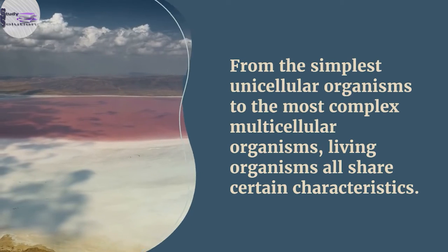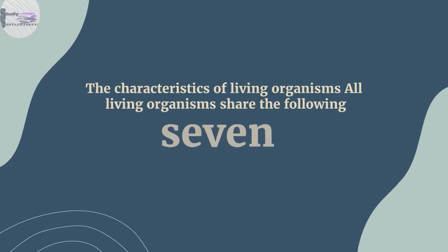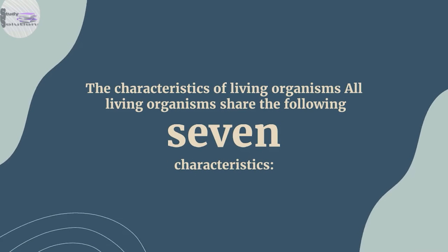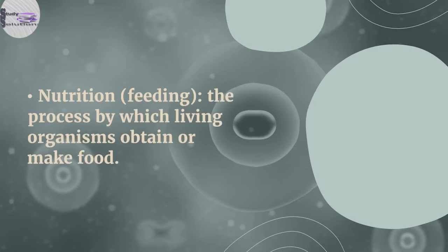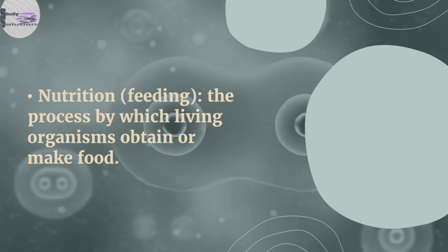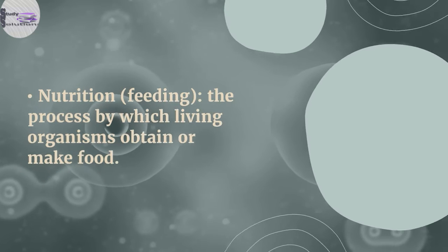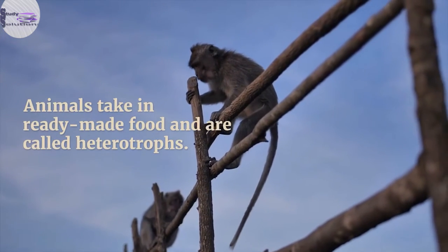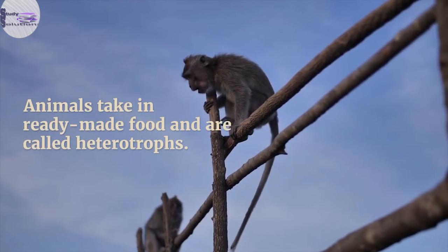The characteristics of living organisms. Living organisms share the following seven characteristics. The process by which living organisms obtain or make food: Animals take in ready-made food and are called heterotrophs. Plants make their own food by the process of photosynthesis and are called autotrophs.